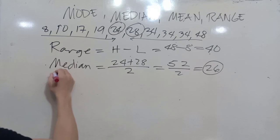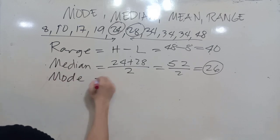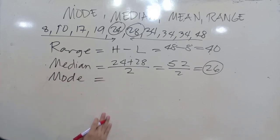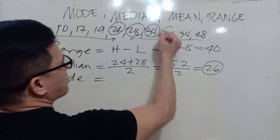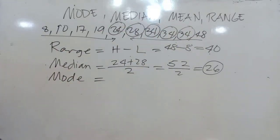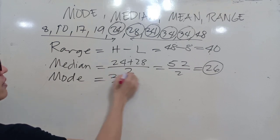How about our mode? Mode is just equal to the most frequent. So we have here the most frequent, 34, 34, 34, three times that appear in a given set of data. So our mode is just 34.